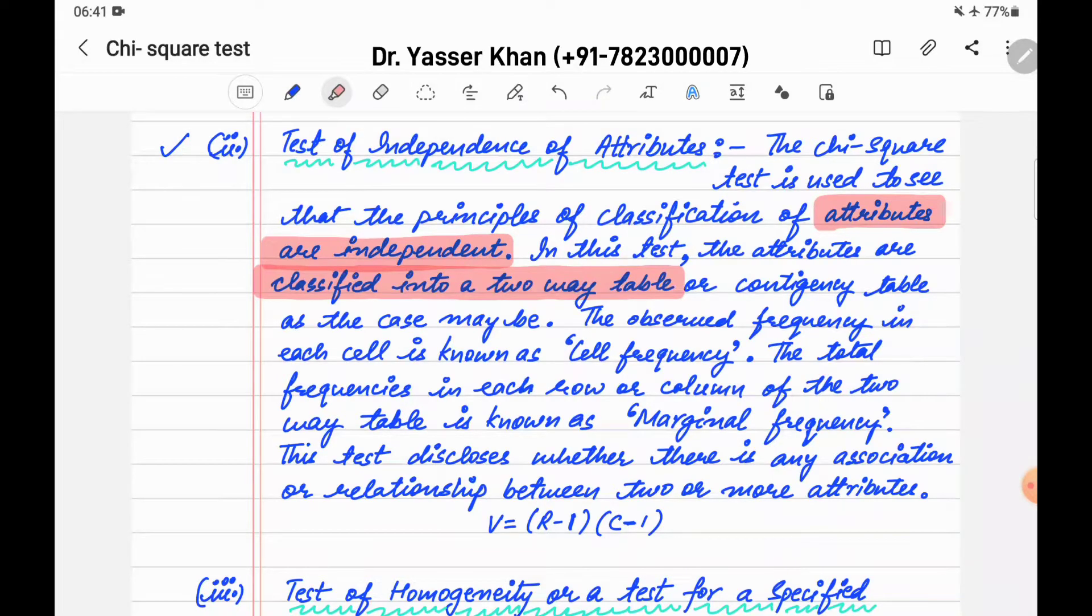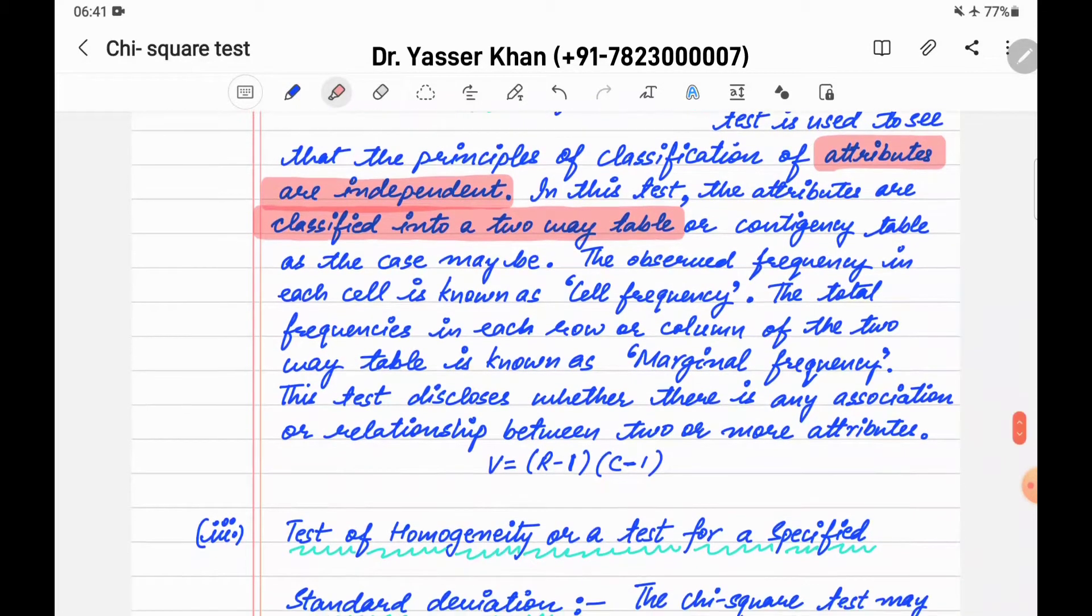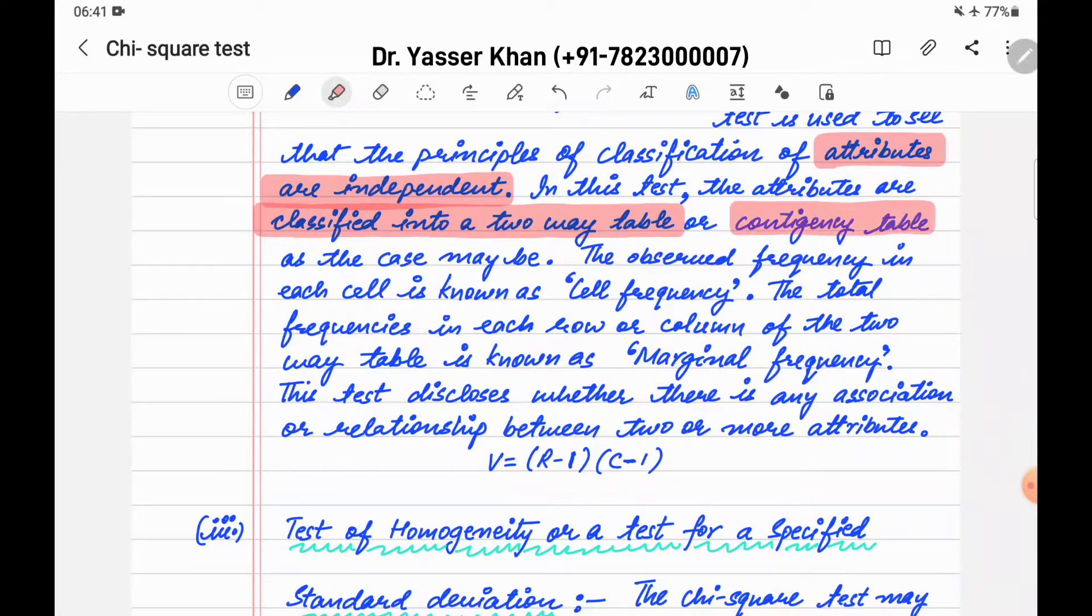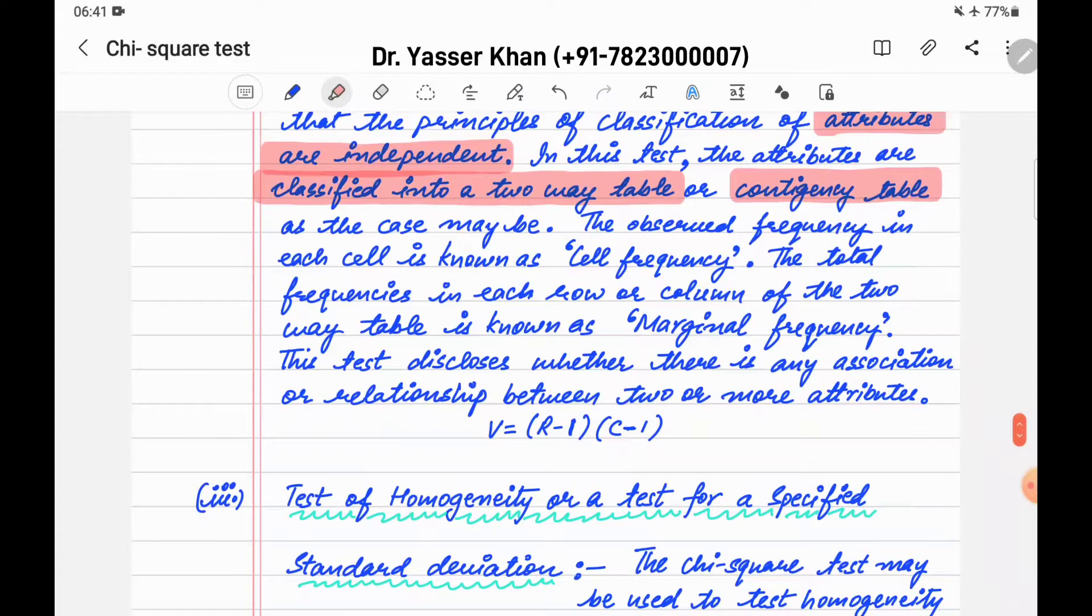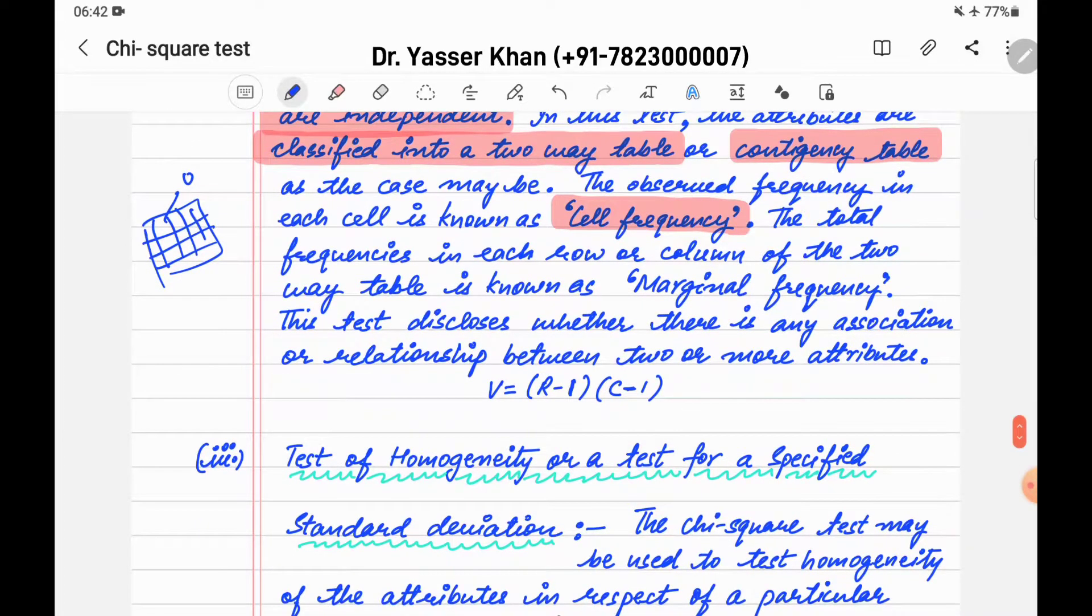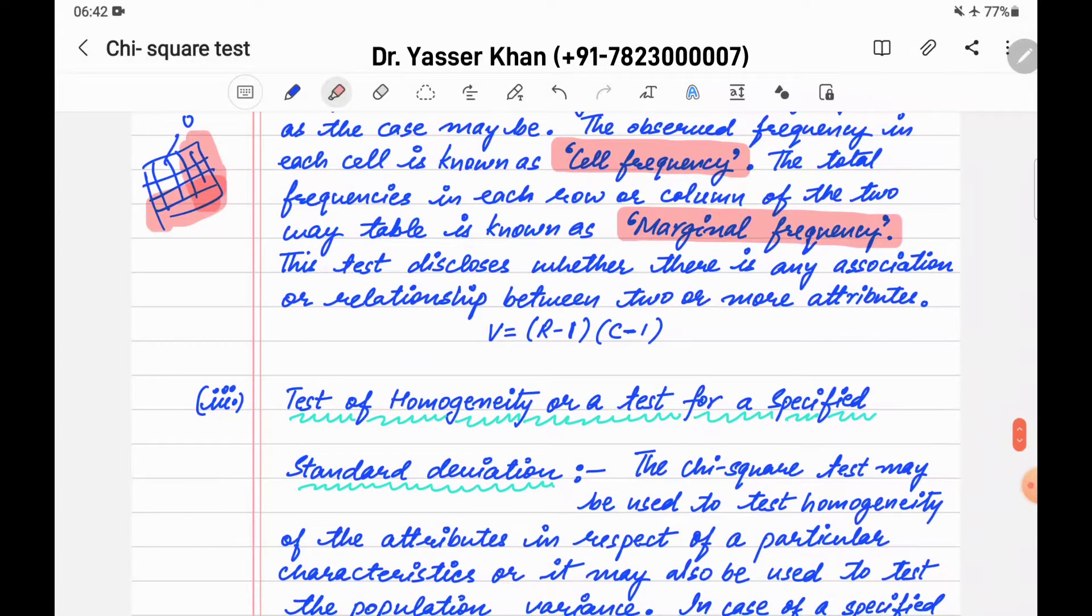A contingency table becomes where the observed frequencies in each cell are known as cell frequencies. The total frequency in each row and column of the two-way table is known as marginal frequencies.